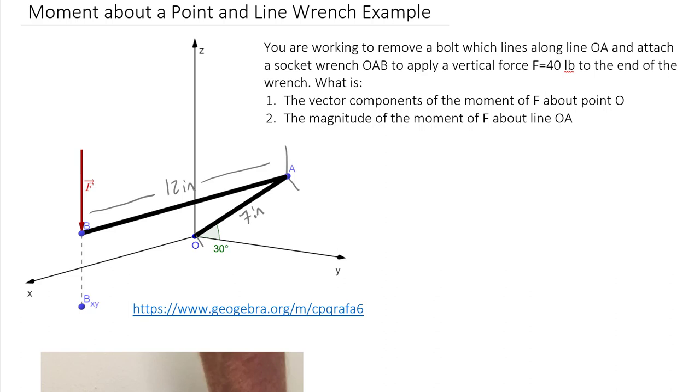As we think about what moment arm we want to use for part 1, we typically want to go from the point of interest to the line of action of the force. We technically could pick one of two lines. One of those would be probably the most obvious one, R of OB, from point O to point B. Technically we could get the exact same answer if we picked a different position vector that went from O to B_XY. We have to pick from our point of interest to a point on the line of action of this force, and B_XY is basically the X and Y components of point B where the Z value would be zero. I'm going to use R_OB.